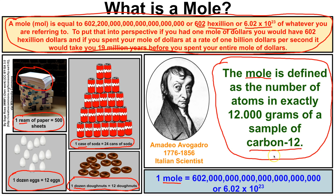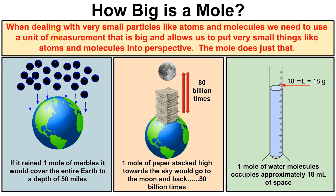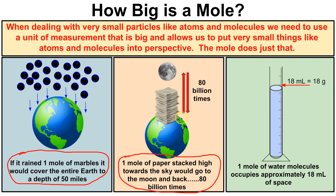The mole is a crazy huge number. To put 602 hexillion into perspective: if we had a mole of dollar bills, you'd have 602 hexillion dollars — and if you spent them at a rate of 1 billion dollars a second, it would take 19 million years before you went broke. In fact, 602 hexillion is larger than the total number of grains of sand on every beach on this planet. If it rained one mole of marbles, it would cover the entire Earth to a depth of about 50 miles. One mole of paper stacked high would go to the moon and back 80 billion times.